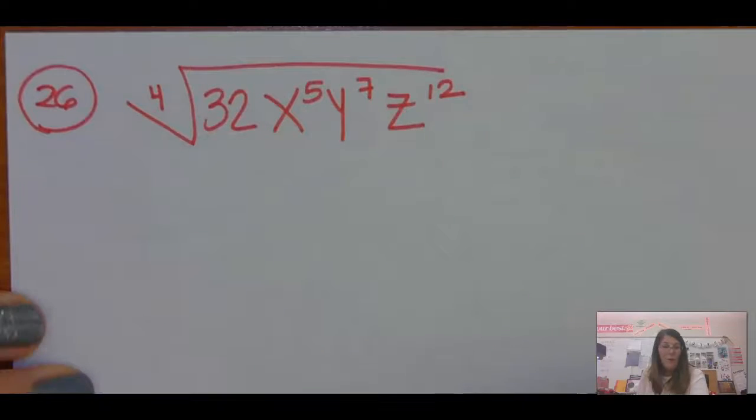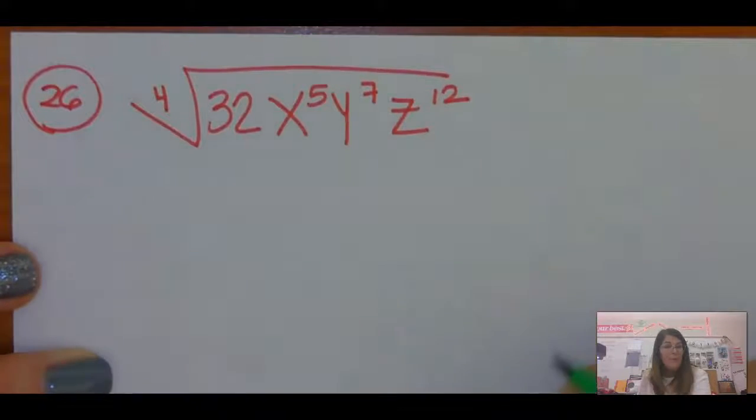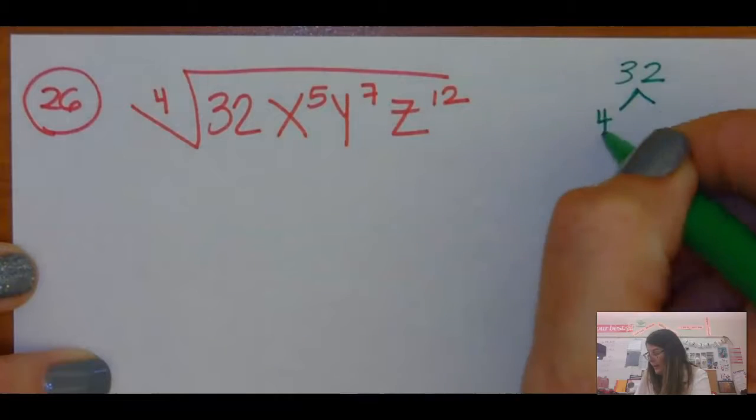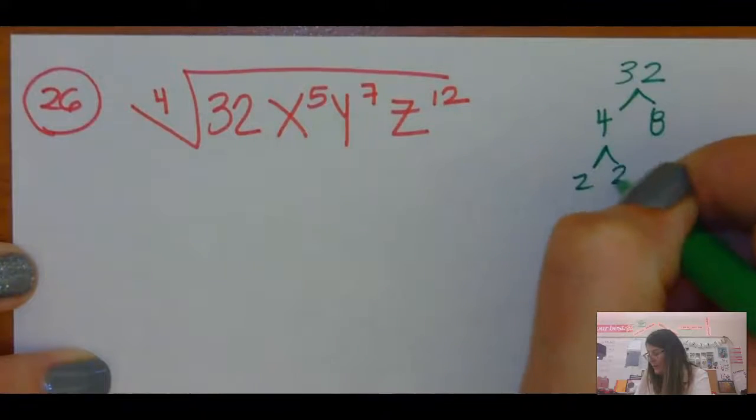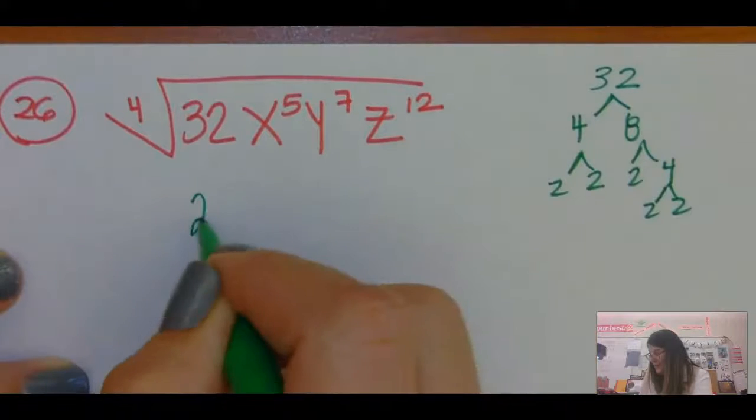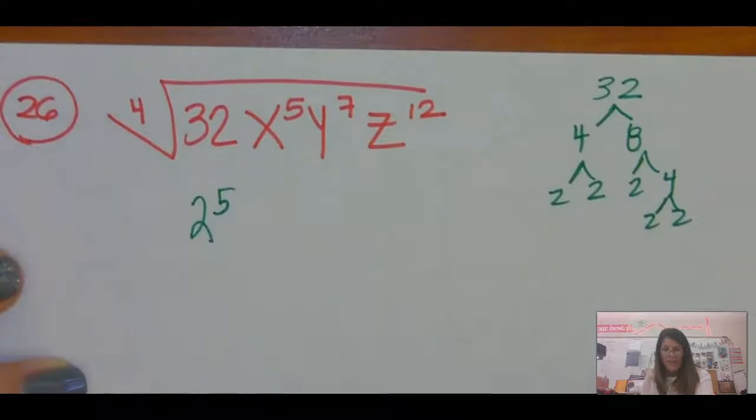If I am finding the fourth root of all these things, I want to write the prime factorization of 32. So 32 is 4 times 8, which is 2 times 2, or 2 times 4. And I do all this, and I realize 32 is 2 to the 5th.